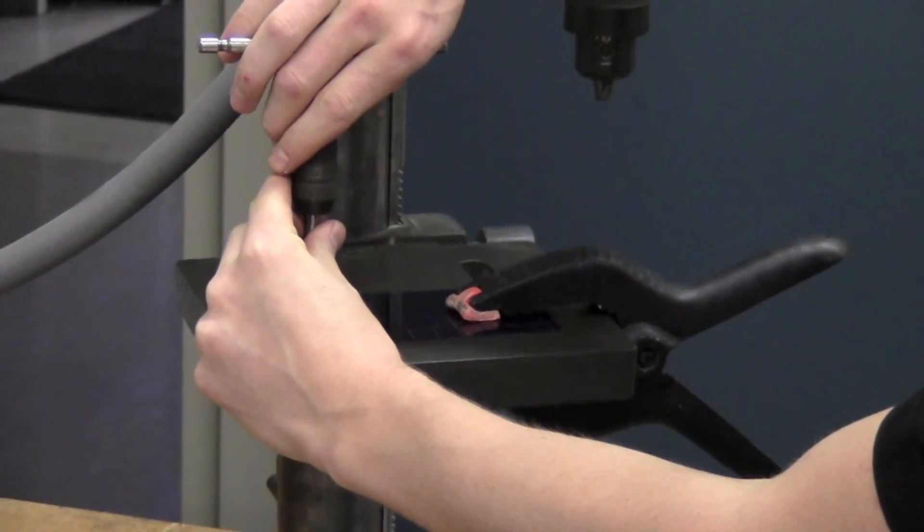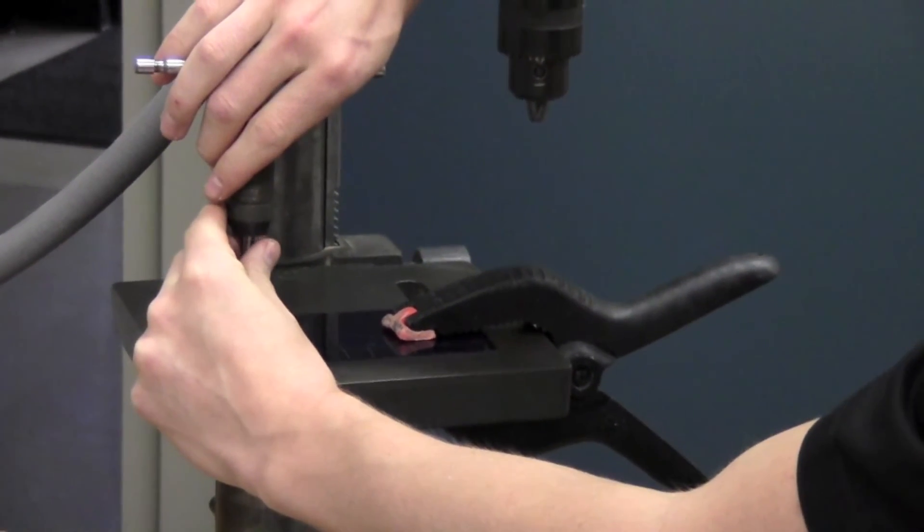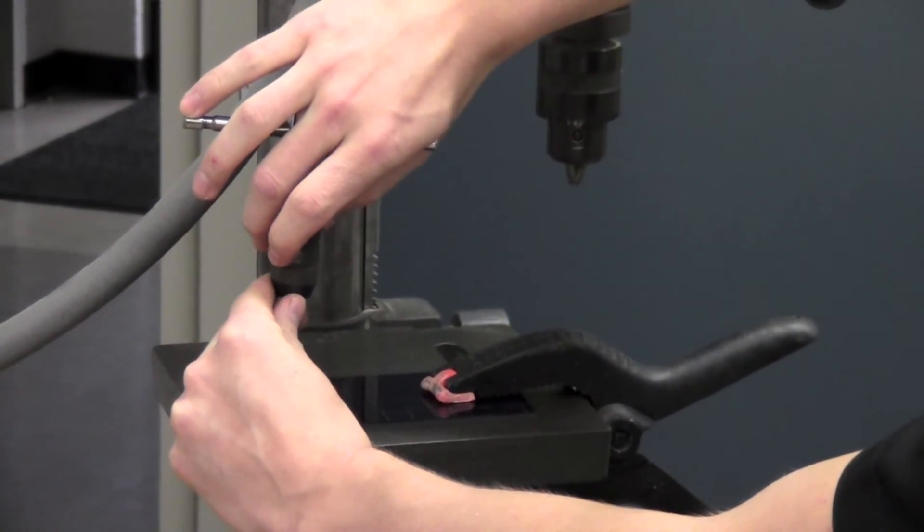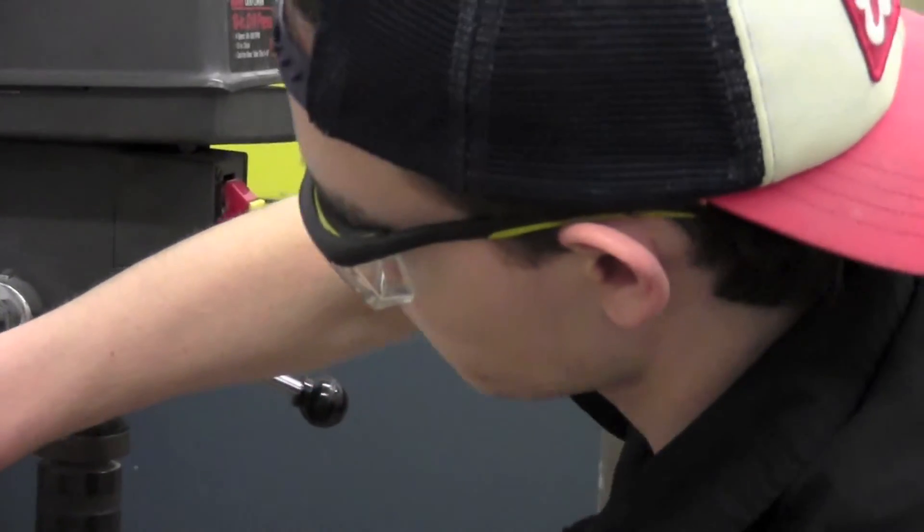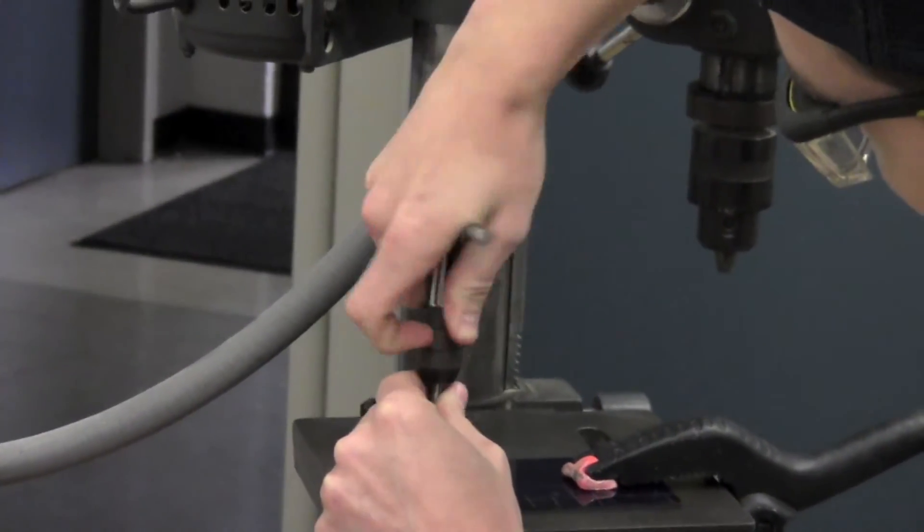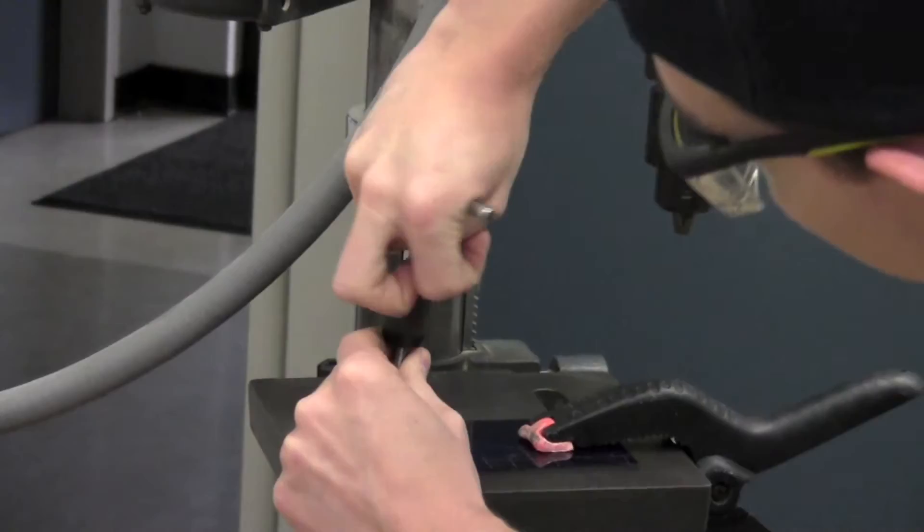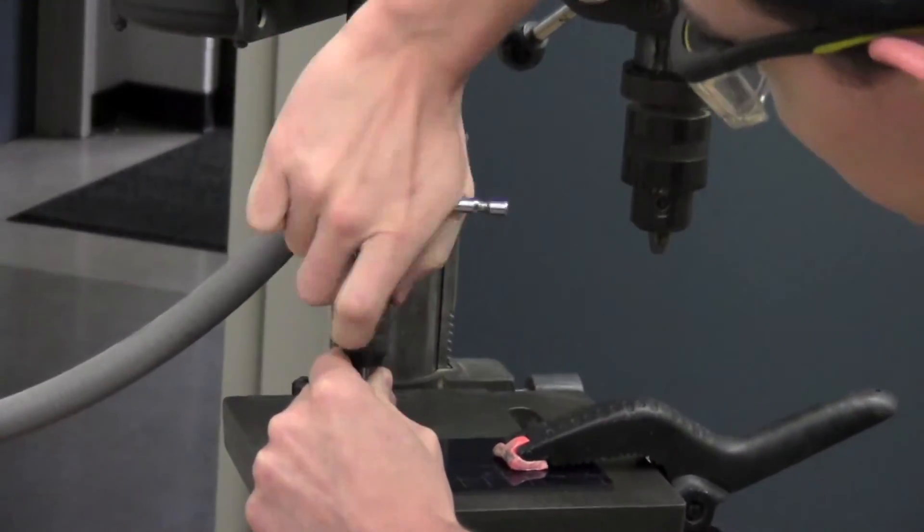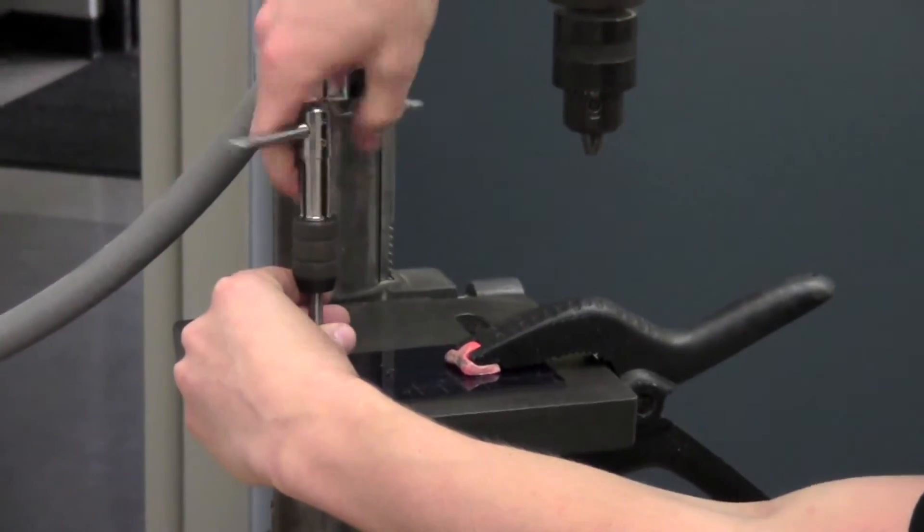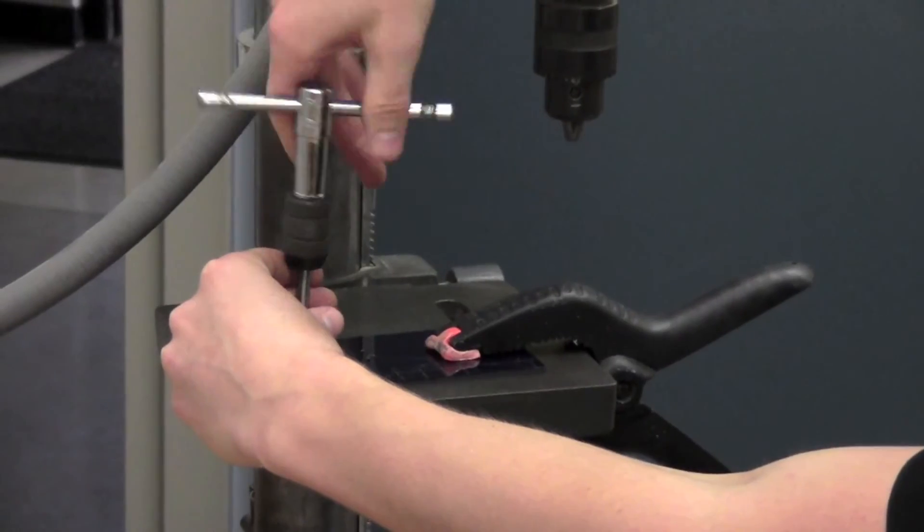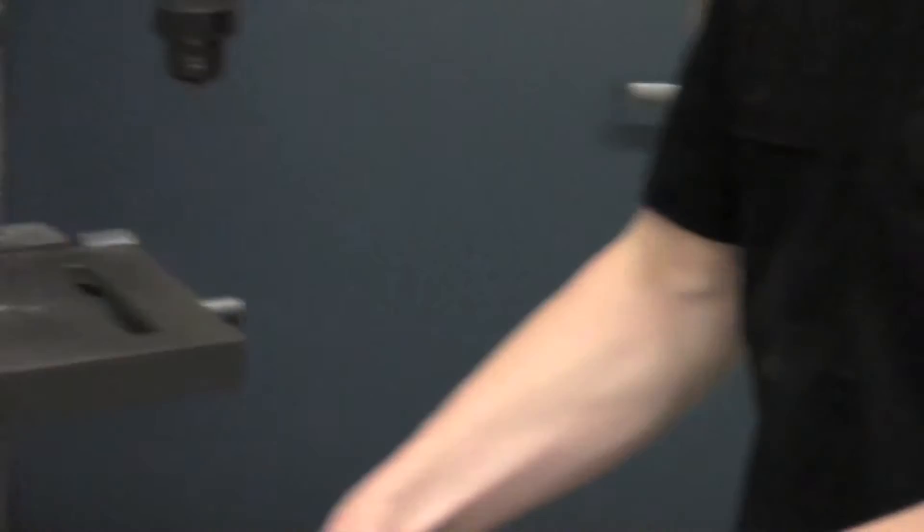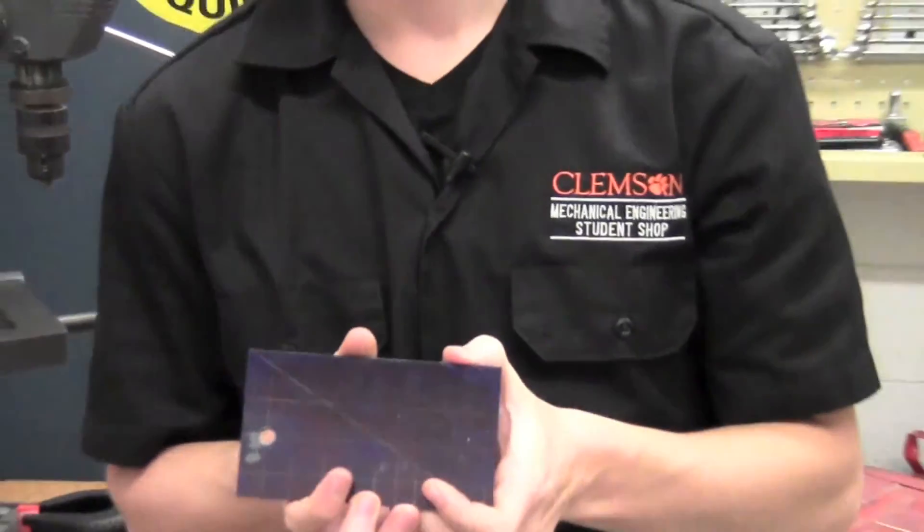You're going to do two rotations forward clockwise and then you'll do one rotation backward. And that helps pull any materials that it's cutting out of the hole. And now you have a tap hole in your part.